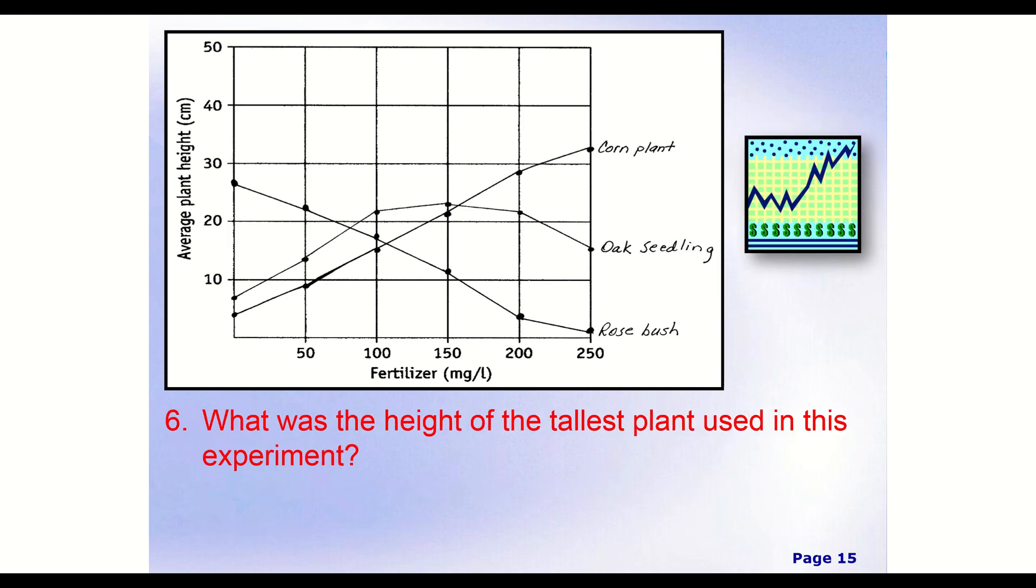All right, so now we're looking at what was the height of the tallest plant used in this experiment. So we have our three options. We have corn plant, we have oak seedling, and we have rosebush. We want to know which one was the tallest and about what height was that. So if we're looking, we have our highest point for our corn plant was right here. Our highest plant for our oak seedling was right here. I'm sorry, it was not right there. For oak seedling was right here.